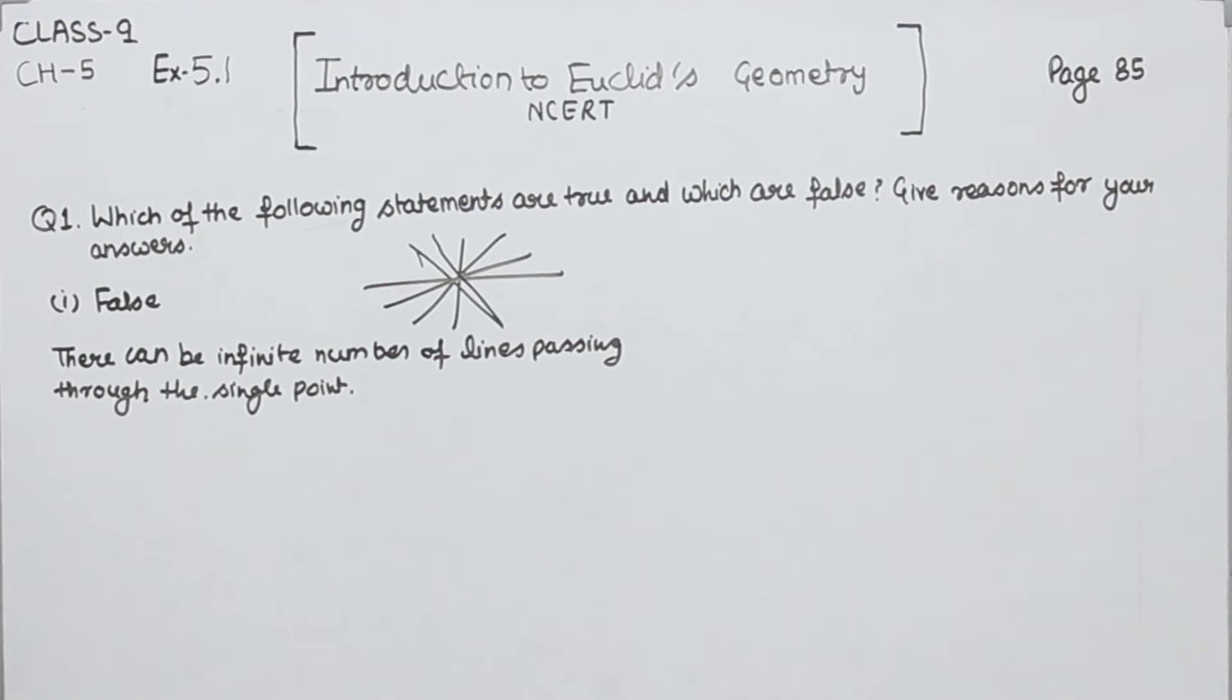Now, come to the second one. There are an infinite number of lines which pass through two distinct points. This one is false.